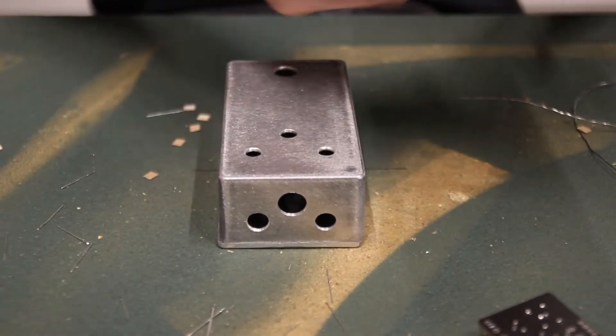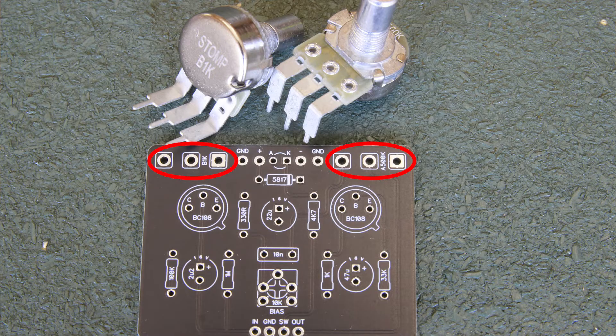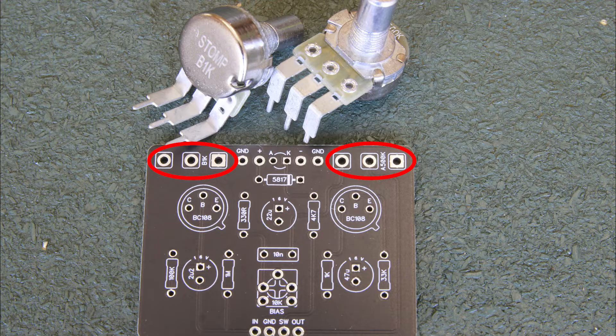Find the bag of pots. They're going to go here and here. There are two different values, A500K and B1K, and that is marked on the PCB.